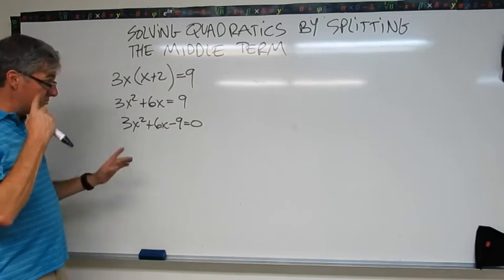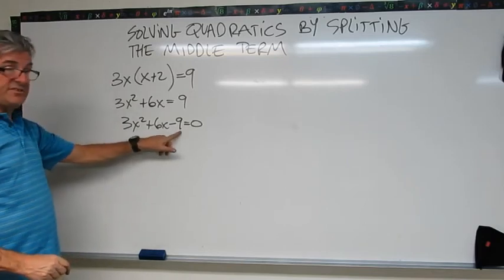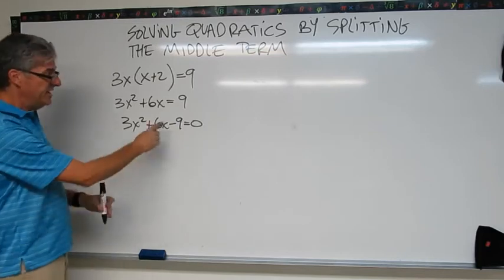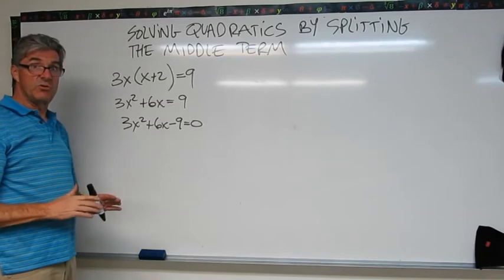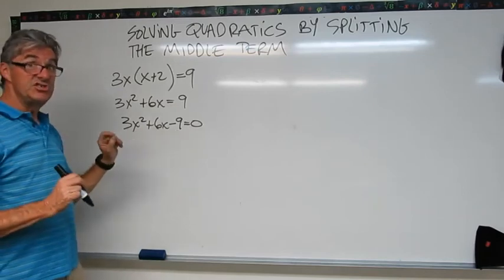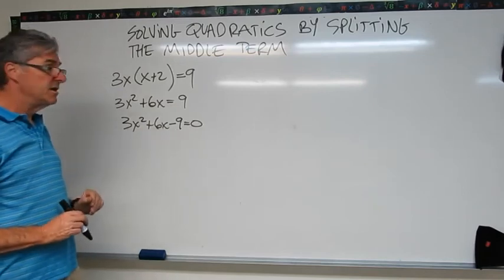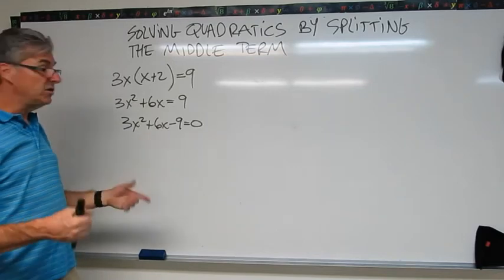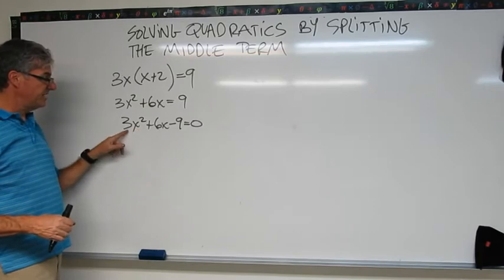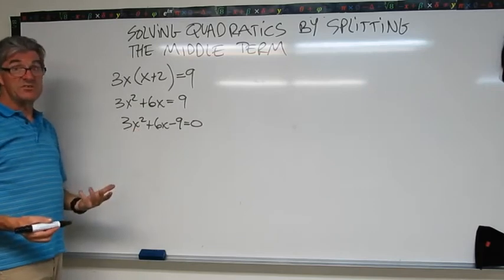Now, in case this was a perfect square, this might have our attention. 9 is a perfect square. However, negative 9 is not. Negative 9 does not have a square root. We can't do that. So even though 9 is suggestive, it's not a perfect square. So we couldn't factor this one using that pattern. So that's our clue along with the fact that we have a 3 sitting out here that we need to split the middle term.